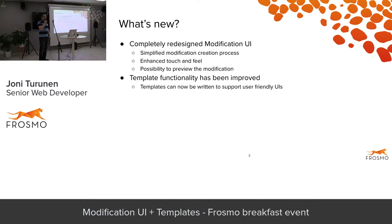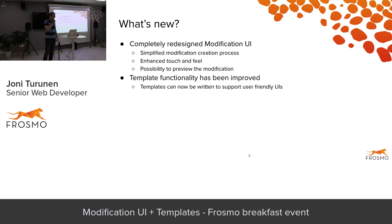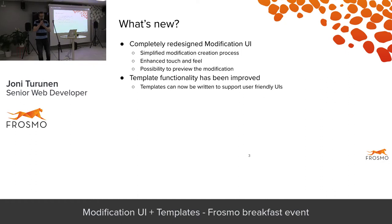I don't know how many of you have used our Frosmo control panel, which I'm going to shorten to FCP. We have had the modification UI for years already, and obviously it was starting to show its age. We had a mission to completely redesign it from different points of view. First of all, we wanted to simplify the modification creation process. We wanted to enhance the look and feel so that it could be in line with what we already have — a unified layout for the whole FCP. As this is one of the most critical parts of our UI, we wanted to spend time on it and really think about the workflows of the users.